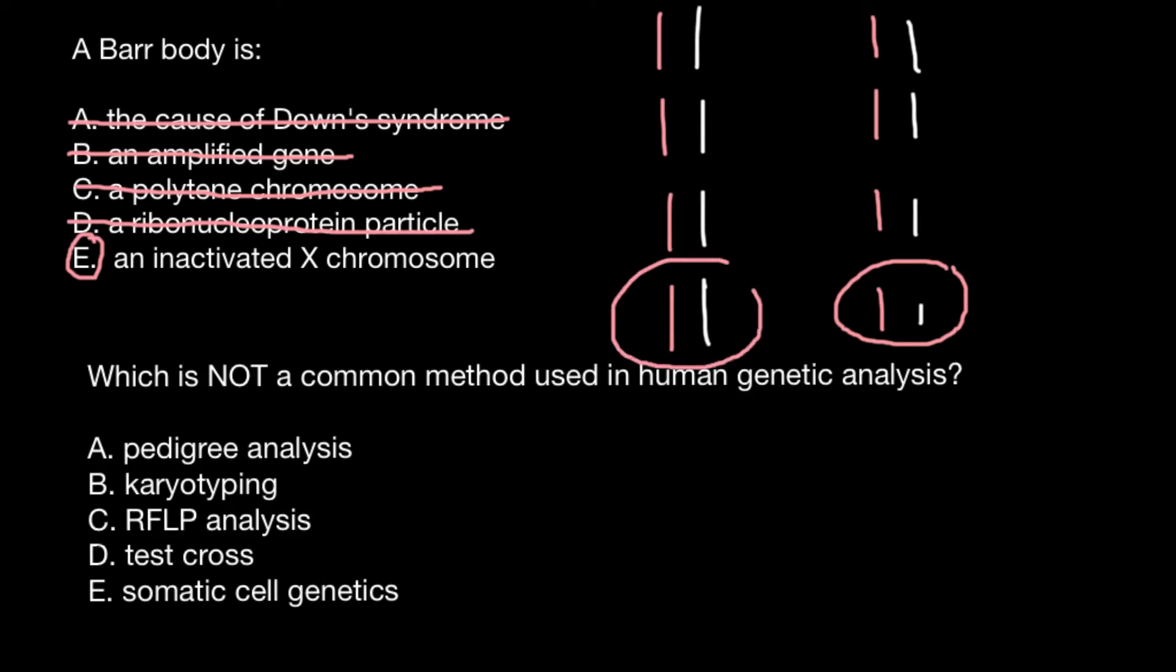So here on the left, this would be the karyotype of the female. The female would have two X chromosomes, but one of the X chromosomes would be inactivated. The inactivated X chromosome would condense and form a Barr body, and the rest of the chromosomes would be in relaxed form, so we wouldn't be able to see them in light microscope.